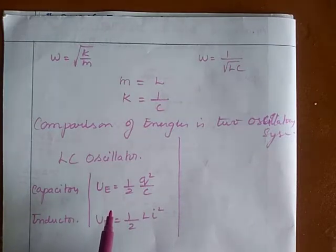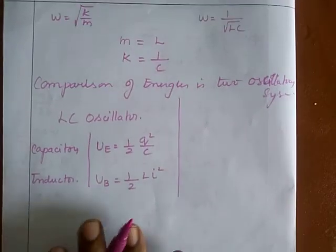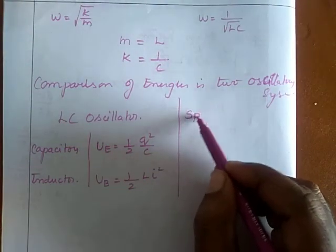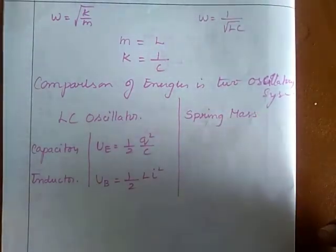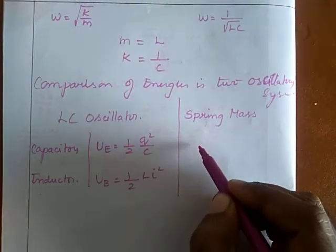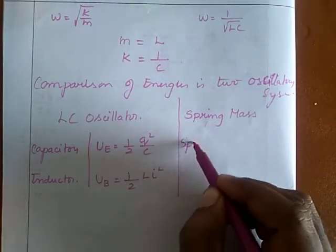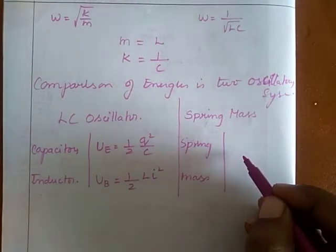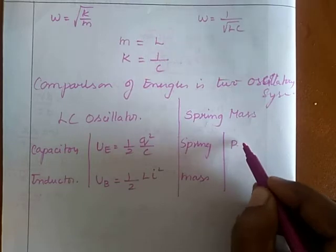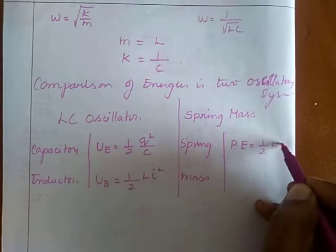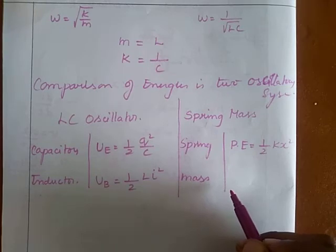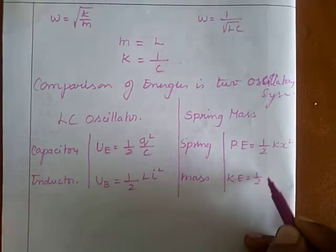The energy stored in a capacitor is electrostatic potential energy, and the energy stored in the inductor is electrodynamic energy. For the spring-mass system, the two elements are the spring and the mass. The energy stored in the spring is potential energy = ½Kx², and the energy stored in the mass is kinetic energy = ½Mv².